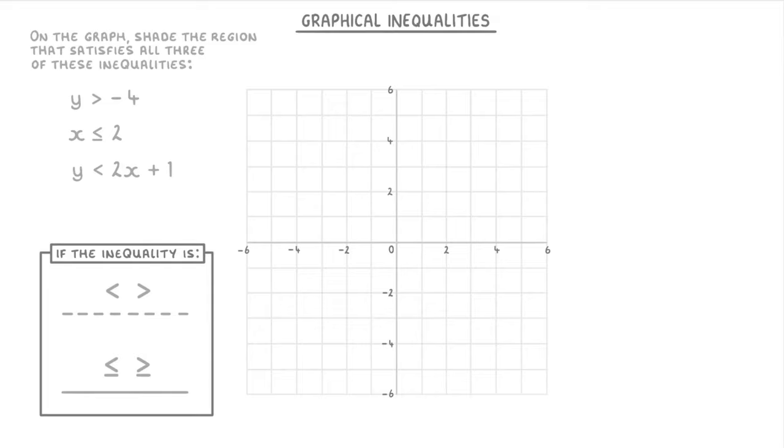So if we go through this question properly and start with y is more than negative 4, that would be a dashed horizontal line that crosses the y-axis at negative 4. And because our inequality tells us that y is bigger than negative 4, we know that the y value must be on this side of the line because all of these y values like negative 2, 0, 2, and all the others are all bigger than negative 4.